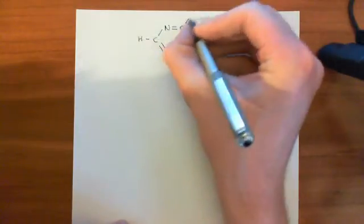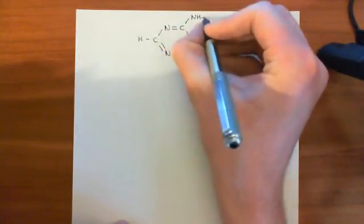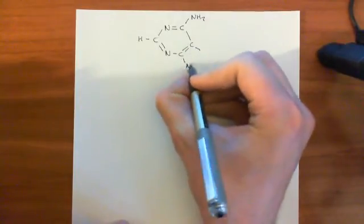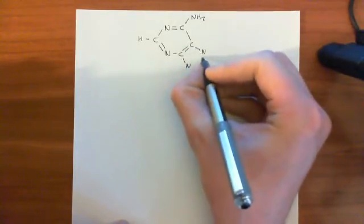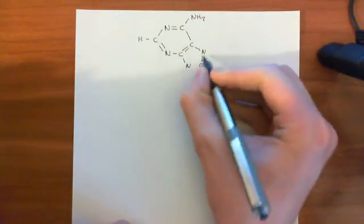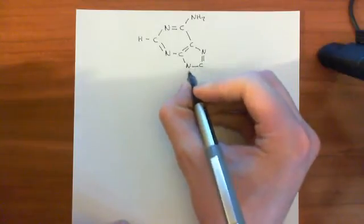Then you have a hydrogen on there, an amino group up here, and then this pyrimidine ring is connected to the imidazole ring. So you have two nitrogens coming off, then the imide bond between the nitrogen and this carbon here, so that double bond is the imide bond, and a single bond there.